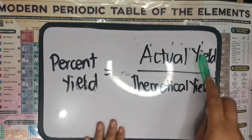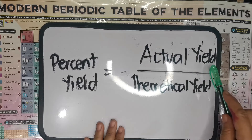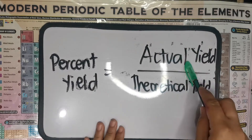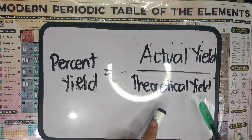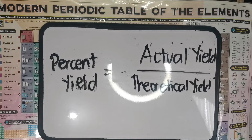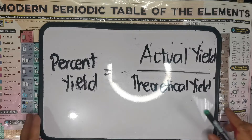Same with percent yield. In an experiment or laboratory, may mga instances na naiiwan doon sa apparatus or kaya tatatapon — hindi natin inaasahan. So that makes the actual yield much lesser than the theoretical yield. Kaya natin i-compute yung percent yield — yung percentage ba ng pagkakagawa ng gamot or yung reaction na closely sa 100%. Although wala tayong 100% talaga sa reaction, kasi hindi maiiwasan yung may naiwan na chemical sa mga laboratory apparatus or yung iba ay natatapon.